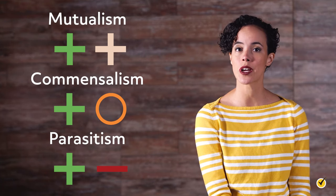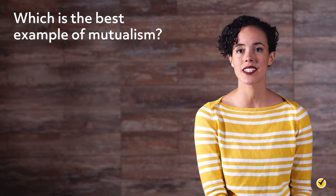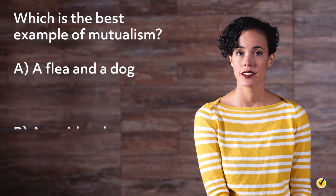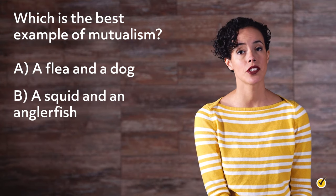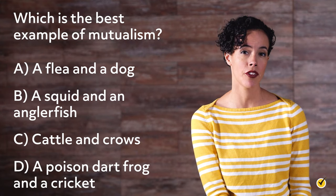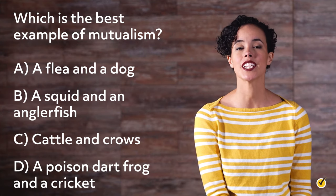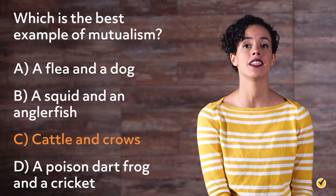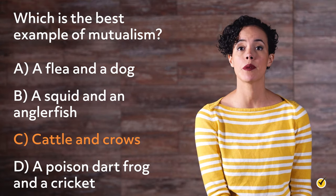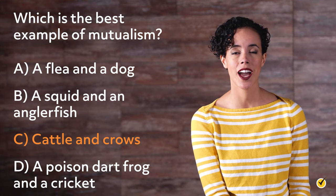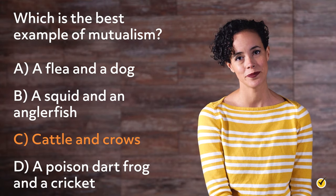Before we go, here's a review question. Which is the best example of mutualism? A: a flea and a dog, B: a squid and an anglerfish, C: cattle and crows, or D: a poison dart frog and a cricket? The answer is C. Crows and other birds will get a free meal by eating insects and fleas off of the backs of cattle, and cattle will get a free cleaning. Both the crows and the cattle benefit, so that makes this relationship mutual. Happy studying!